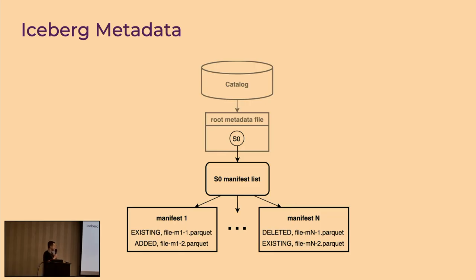A snapshot of a table is a read-only view of its data at a particular point in time. The snapshot provides a complete listing of all the files that belong to the table when the snapshot was created. Files in a snapshot are tracked by one or more manifest files, which capture file location, partition tuple, column stats, sizes, and other information. All of the manifests for a snapshot are indexed in a manifest list, which is essential for quick navigation through large chunks of metadata.